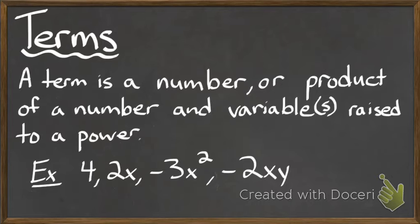2 times x is an example of a term — in this case the power is just 1, and whenever you have a power of 1 it's essentially imaginary, you don't really need to write it down. Negative 3 times x squared is a term. And negative 2 times x times y is also a term. These are just four examples of terms; there's an infinite amount of terms you can create.